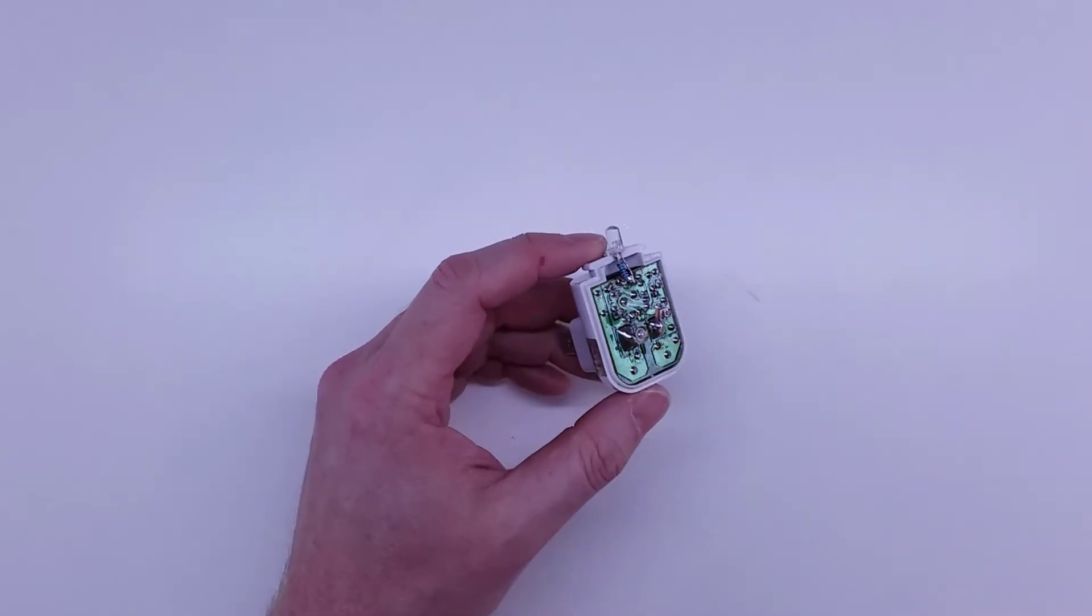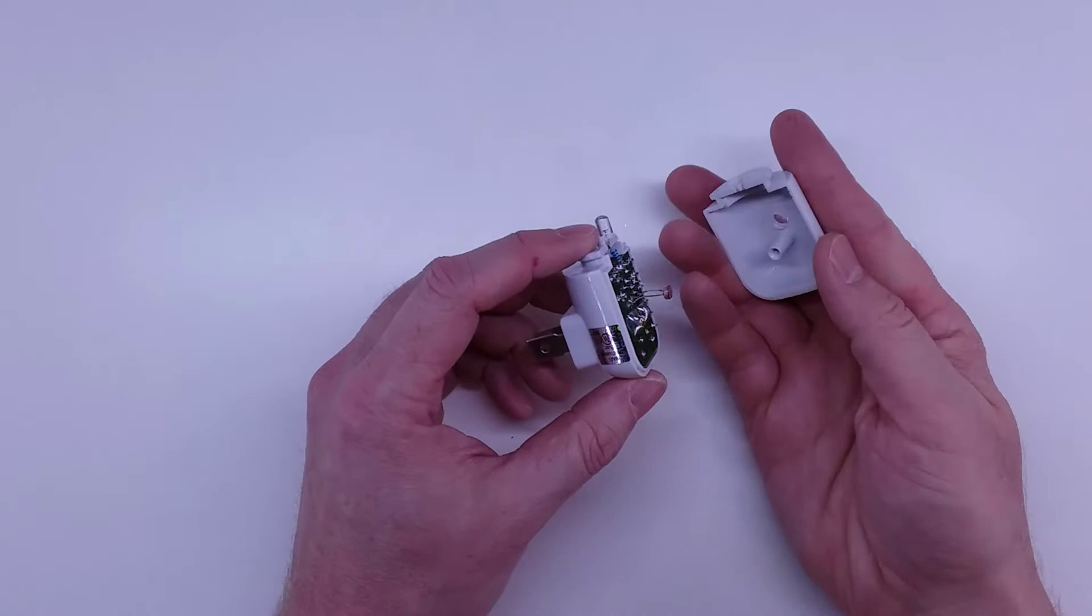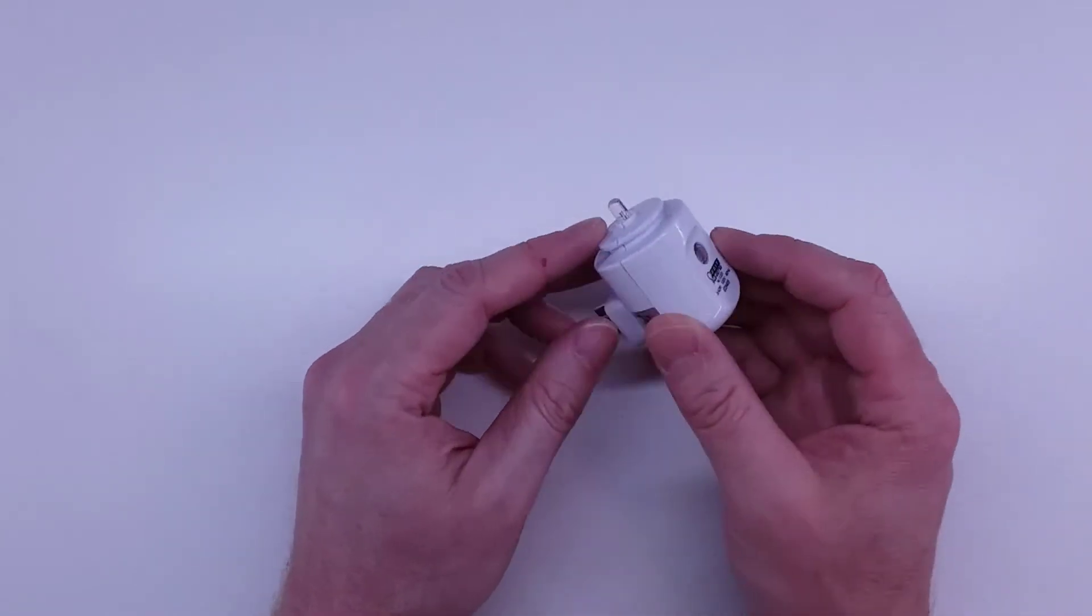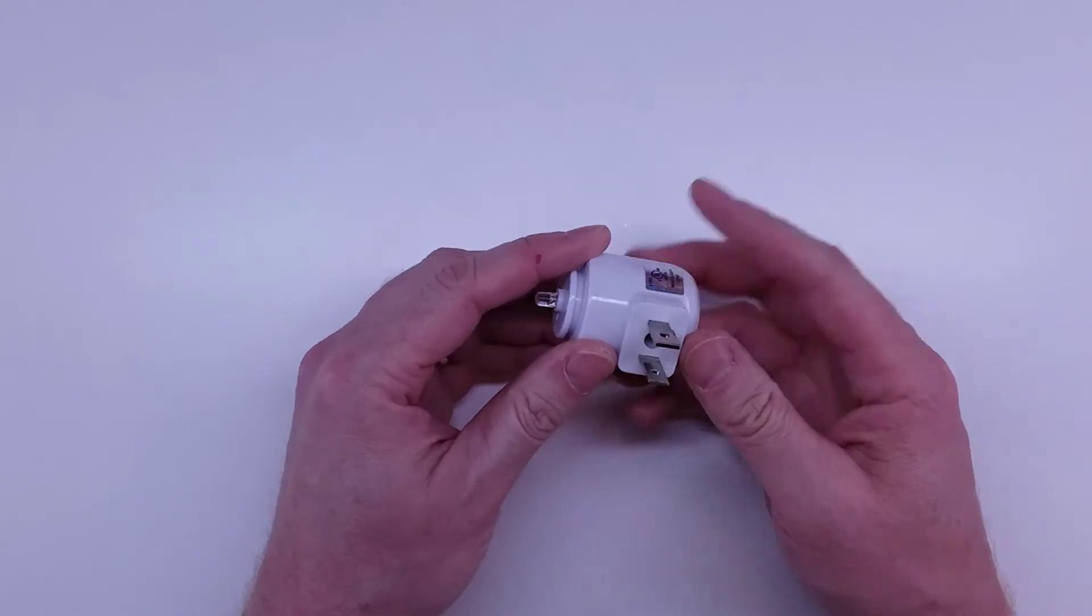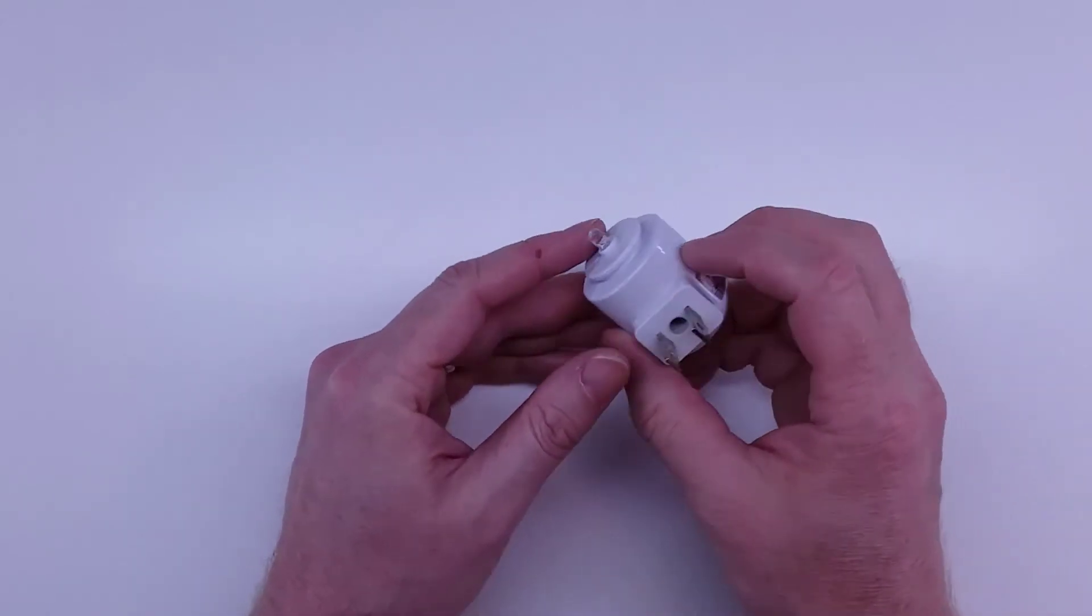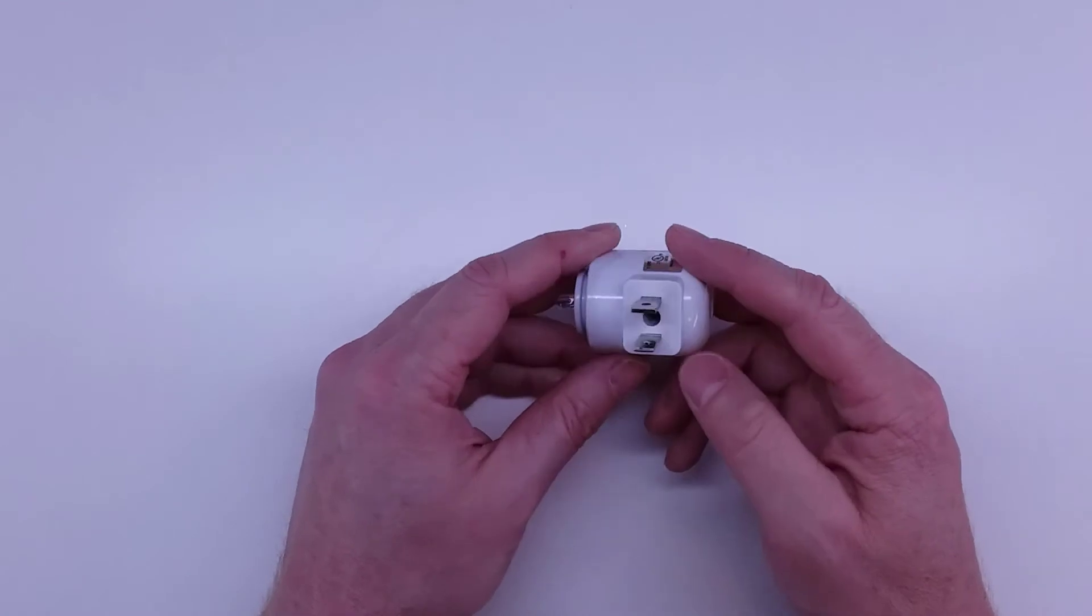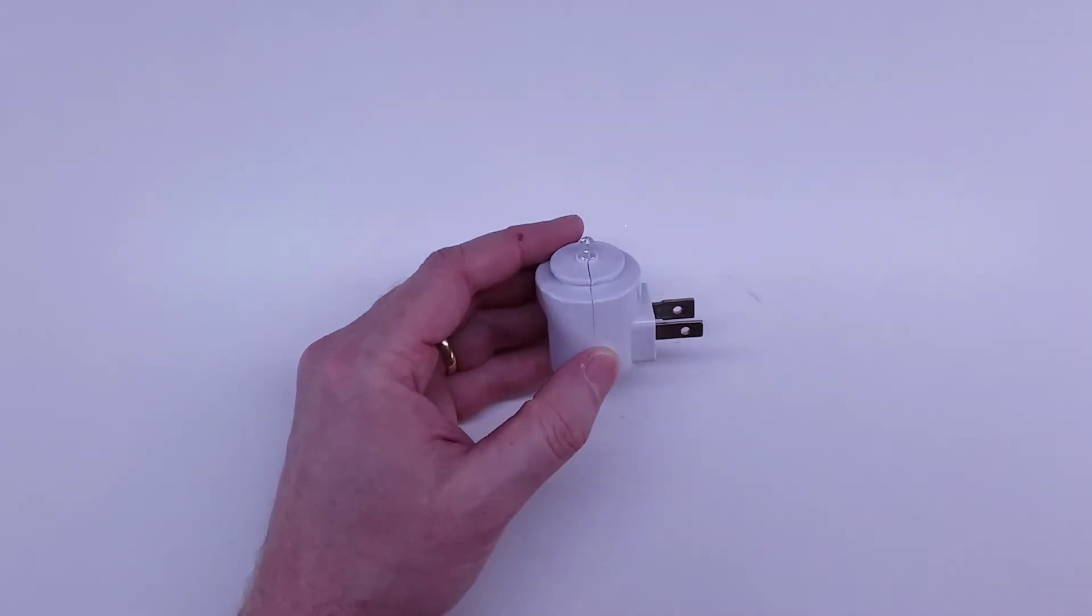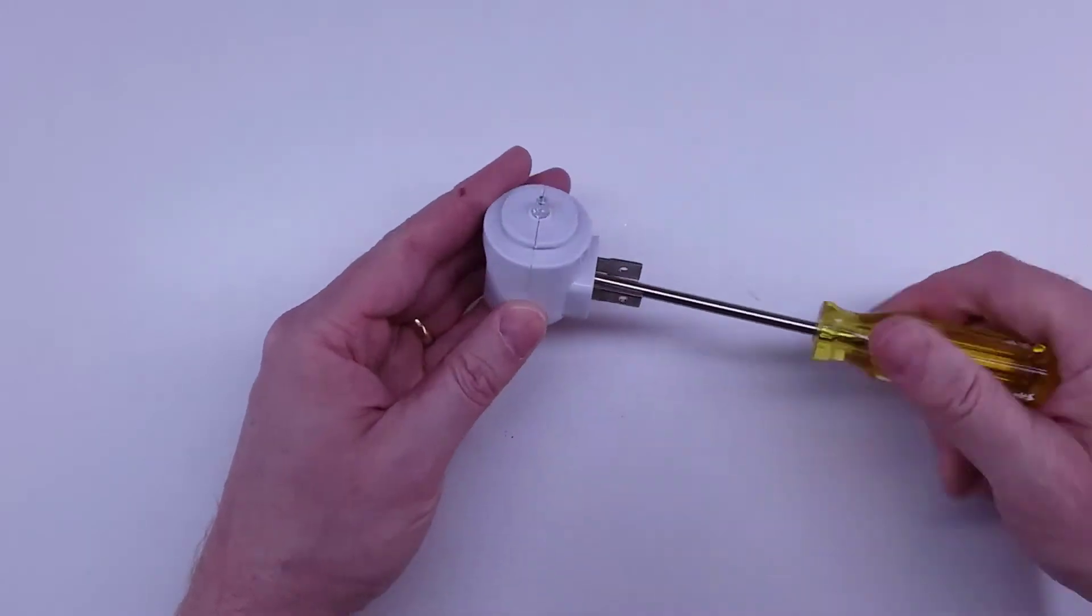Now to assemble this, the easiest way is to make sure you line up that photo resistor into the window here before you put the screw back on. These screws can be a little bit of a nuisance on this particular model. Now that I've got the screw in, we can just go ahead and tighten that back up.